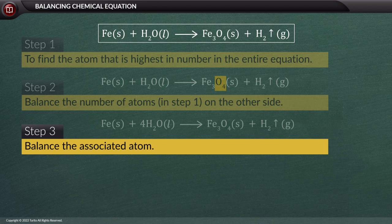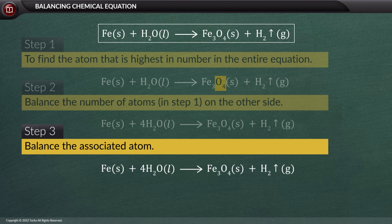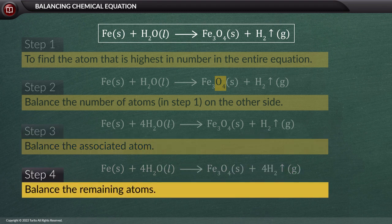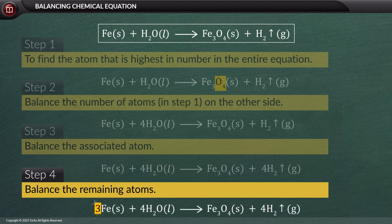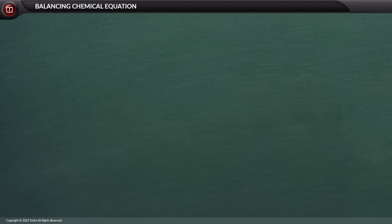Step 3: Balance the associated atom taken in step 1. Let us pick the associated atom, which is H. Here we put 4 in front of H₂ on the LHS. So till this point the equation becomes: Fe(s) + 4H₂O(l) → Fe₃O₄(s) + 4H₂. Step 4: Balance the remaining atoms. Thus the equation becomes: 3Fe(s) + 4H₂O(l) → Fe₃O₄(s) + 4H₂.